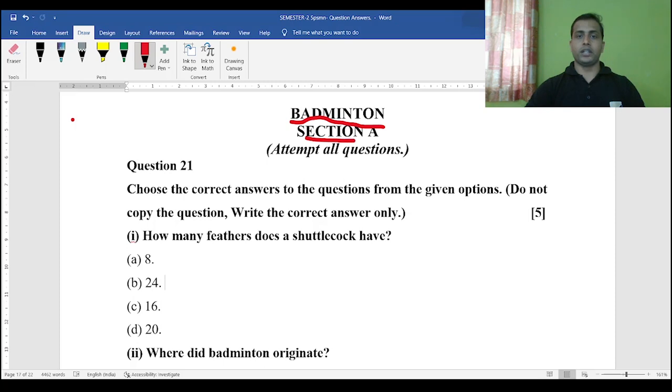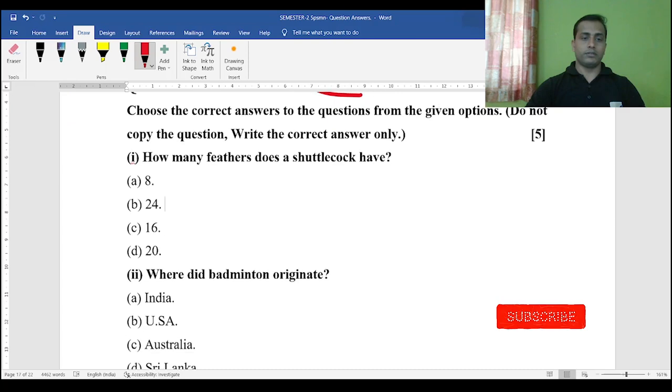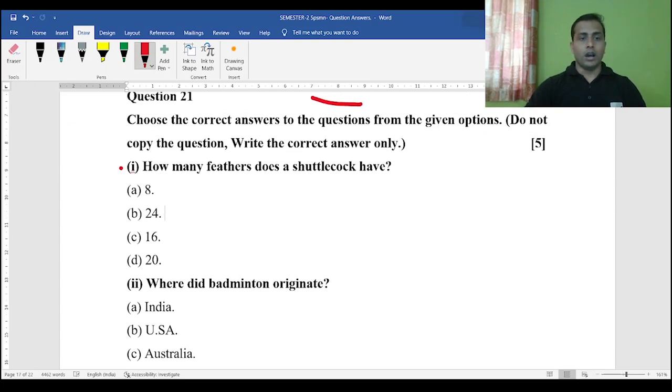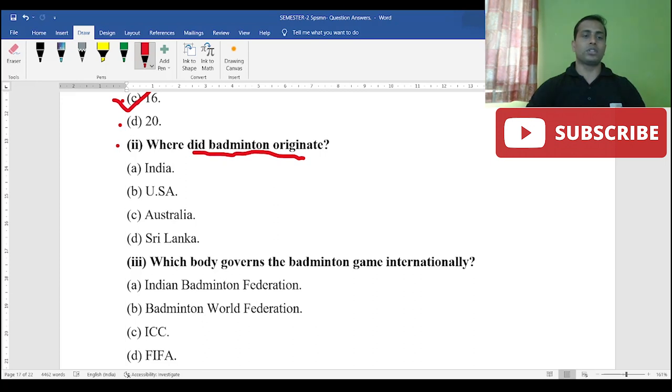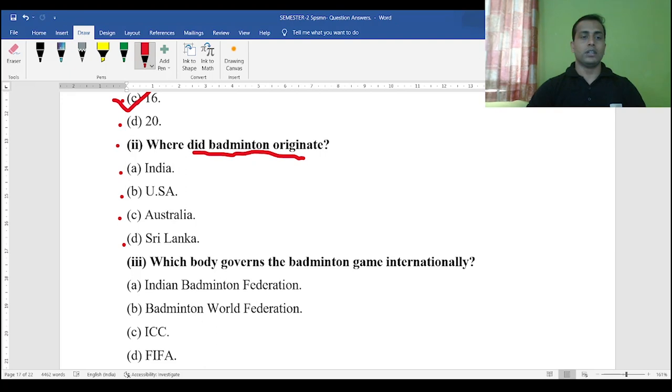Section A: You need to attempt all the questions from Section A. First question: How many feathers does a shuttlecock have? Options are 8, 24, 16, 20. The answer will be obviously 16. Next question: Where did badminton originate? Options are India, Australia, USA, Sri Lanka. The answer will be India, basically South India.